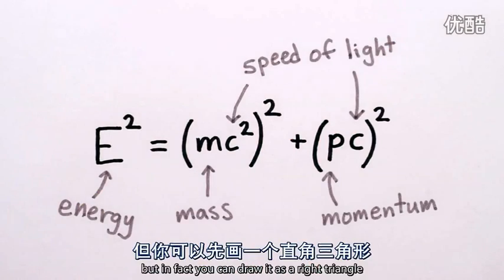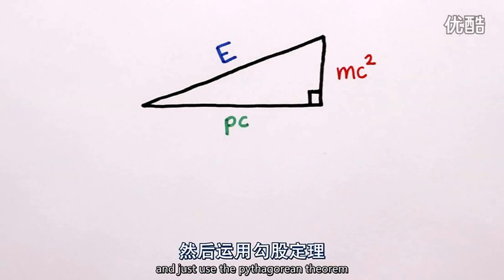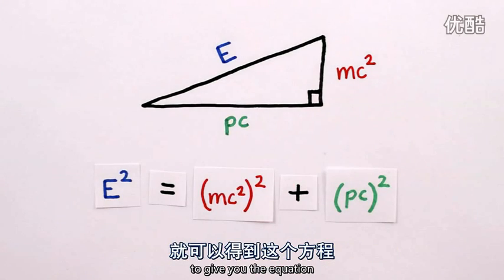This might all seem a bit confusing, but in fact you can draw it as a right triangle with sides E, mc squared, and pc, and just use the Pythagorean theorem, a squared plus b squared equals c squared, to give you the equation.